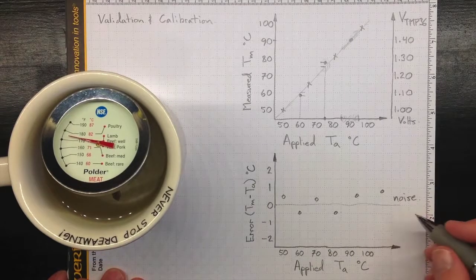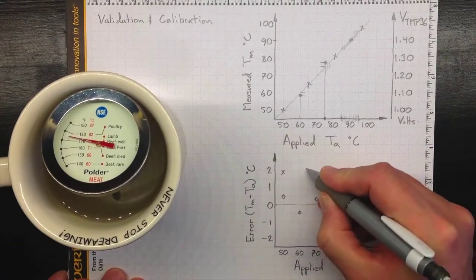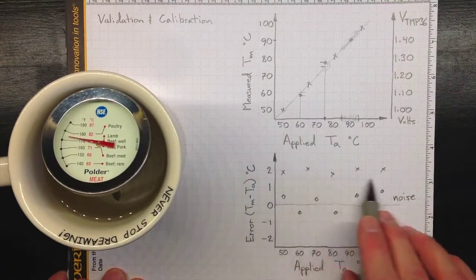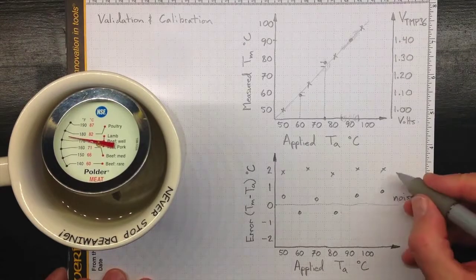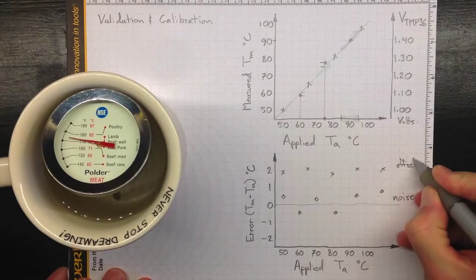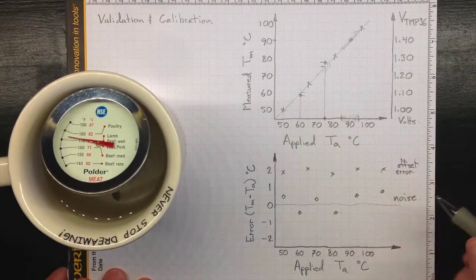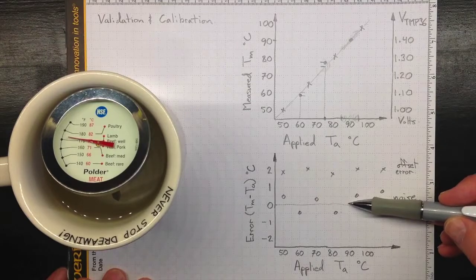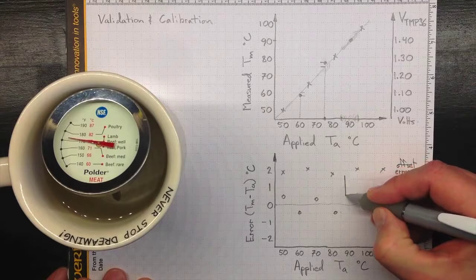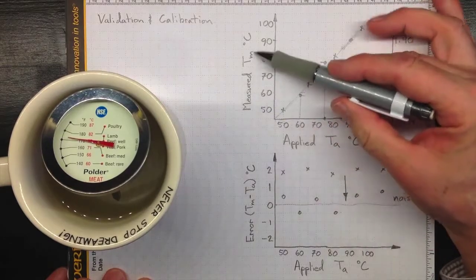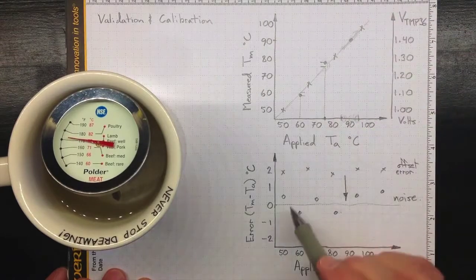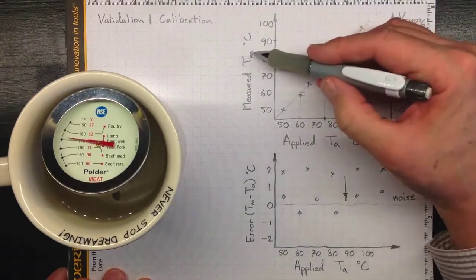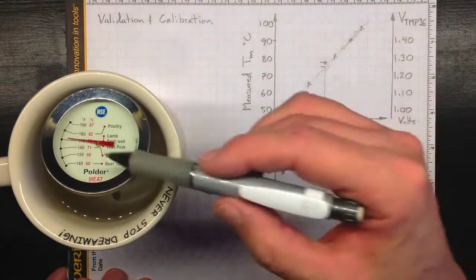On the other hand, we might find that all of our data points were bigger than the value indicated, that we had a positive error on all of these. This tells us that we've got an offset error. All of our measured values are about two degrees higher than the actual value. We could correct for that in calibration. We could move all of these down by taking our measured temperature and subtracting two from it. They'd all wind up back down on this line. That's our calibration process. We can detect what the errors are and adjust how we make an estimate of the actual temperature based on the readout of the dial.